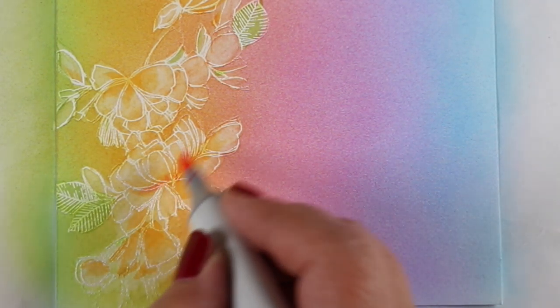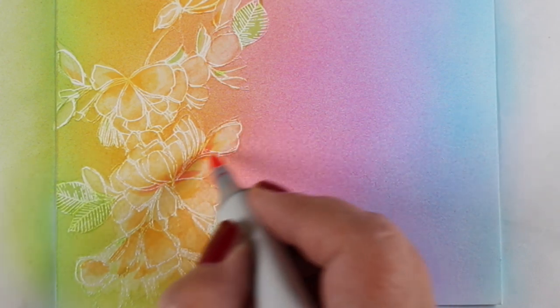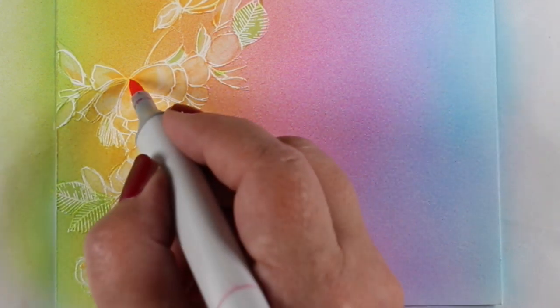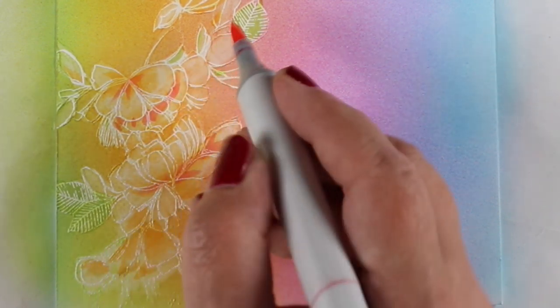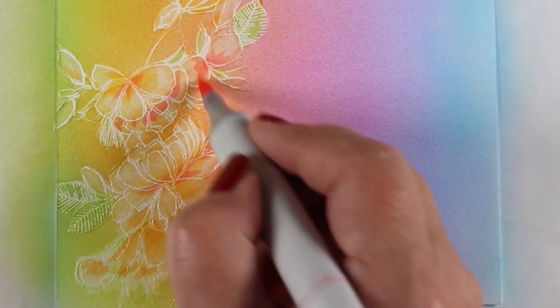So I grabbed a pink and started putting a little bit of a darker pink in some of the very darkest areas. And this is one of those places where you can take baby steps so that you don't scare yourself too much.